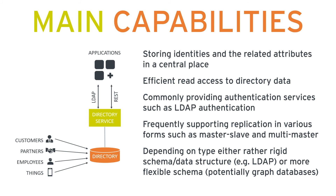Directories have a schema — the data structure — which can be somewhat more rigid, as in LDAP directories, or more flexible, which is potentially the case in newer types of directories that build on graph databases. This allows you to add data if required, depending on the type of directory. For access, the traditional protocol is the Lightweight Directory Access Protocol, but we also see more and more REST APIs, which allow access to that information.